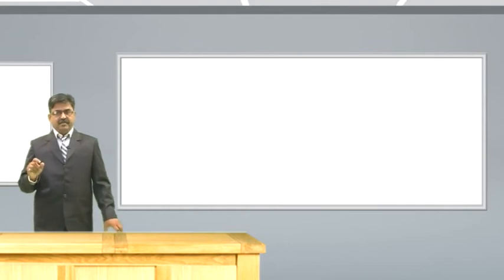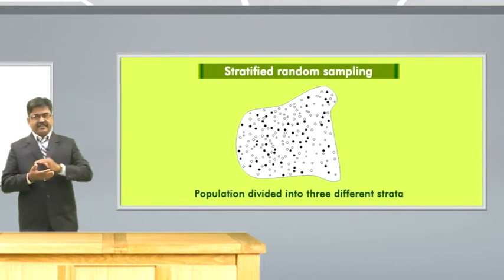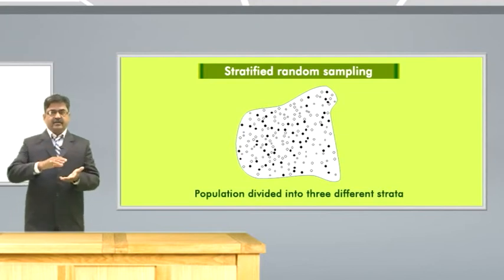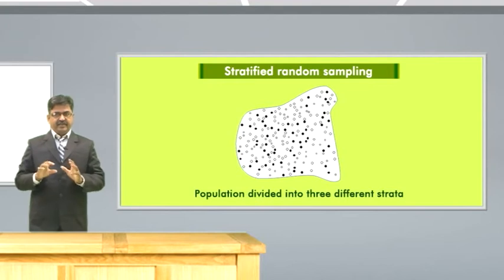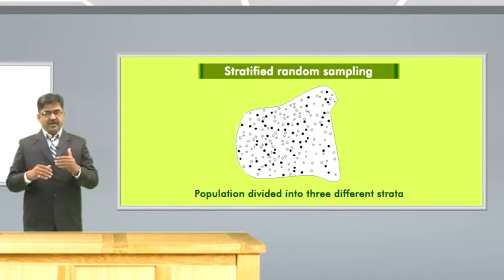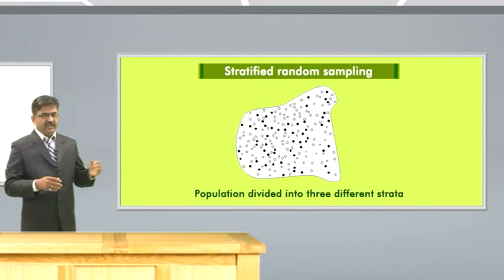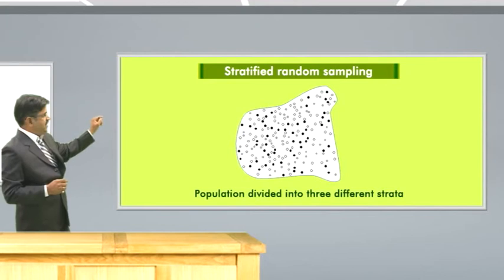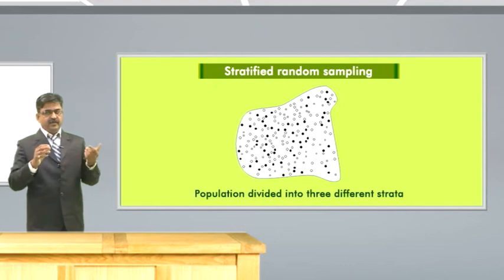Then comes the stratified random sampling method. In stratified random sampling, we are interested in understanding different strata. Suppose you want to study somebody based on income — you want in your sample lower income group members, middle income group members, and higher income group members — so three strata are made. Accordingly, we will select the sample using simple random sampling method from these three sampling strata. This is called stratified random sampling. In this figure, you can see three types of dots, signifying three strata of the population from which a sample has been drawn.